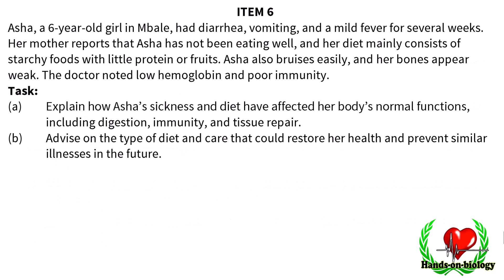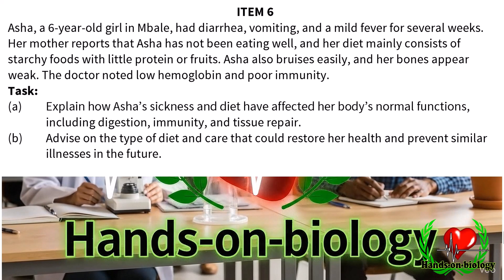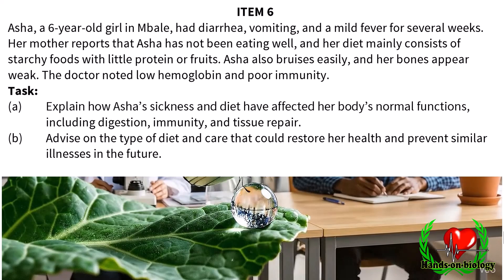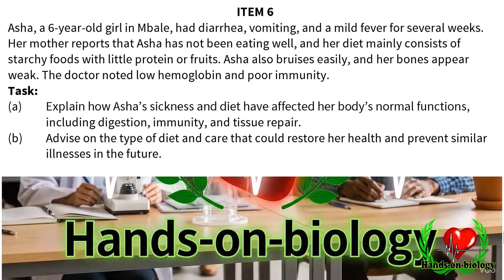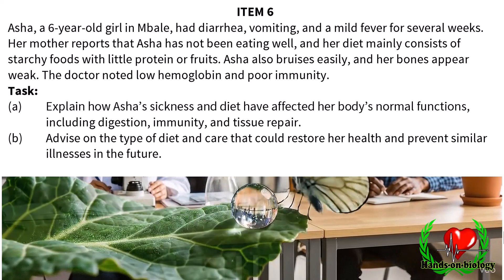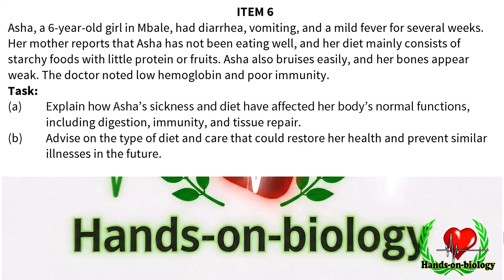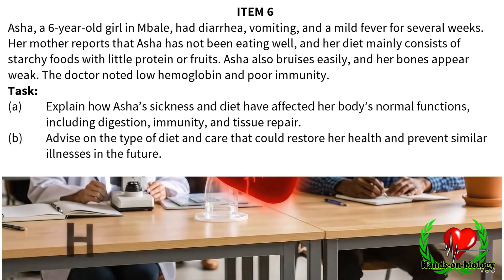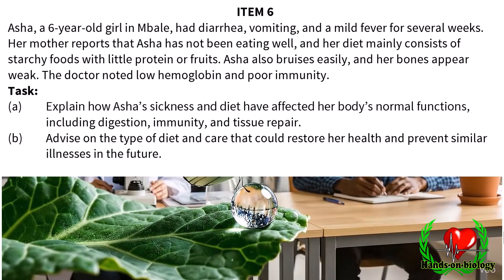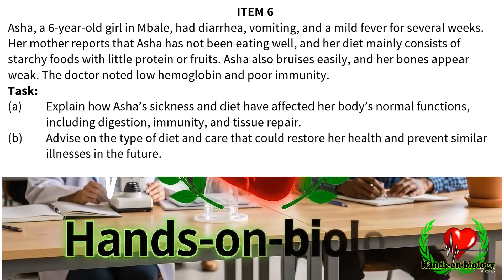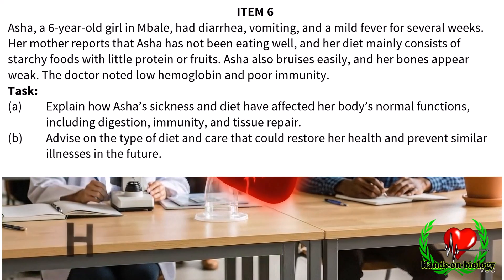Item 6: Asha, a six-year-old girl in Mumbai, had diarrhea, vomiting, and a mild fever for several weeks. Her mother reports that Asha has not been eating well, and her diet mainly consists of starchy foods with little protein or fruits. Asha also bruises easily and her bones appear weak. The doctor noted low hemoglobin and poor immunity. Task Part A: explain how Asha's sickness and diet have affected her body's normal functions, including digestion, immunity, and tissue repair. Part B: advise on the type of diet and care that could restore her health and prevent similar illnesses in the future.